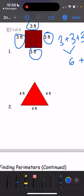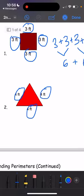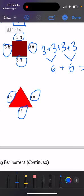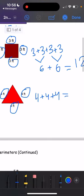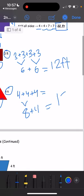Alright, number 2. We have 4 feet here, 4 feet here, and 4 feet here. We're going to add all of the numbers up. So 4 plus 4 plus 4. What is 4 plus 4? 4 plus 4 is 8. And we're going to add another 4. 8 plus 4 equals 12 also. So the answer is 12 feet.